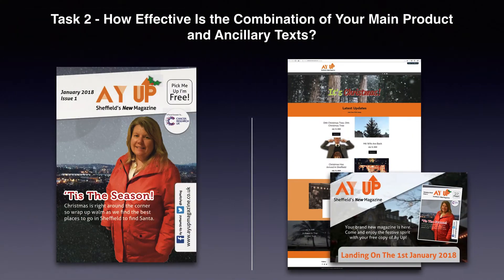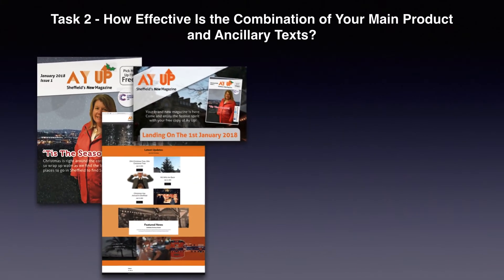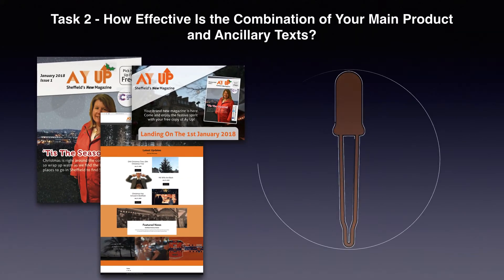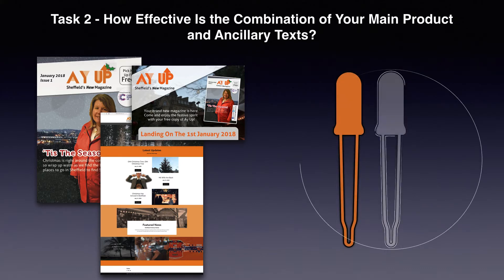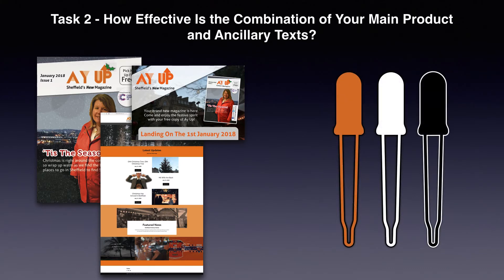For both my main product, which is my magazine, and the ancillary texts, which are a website and an advertisement billboard, I have created a house style which links all three texts together to make them look coherent. This mainly consists of using the same colour scheme throughout my media products to make them as consistent as possible, to make sure that they look like they are part of the same brand.